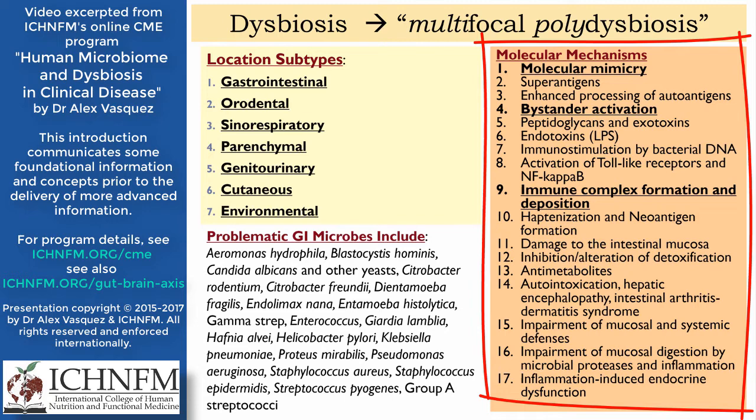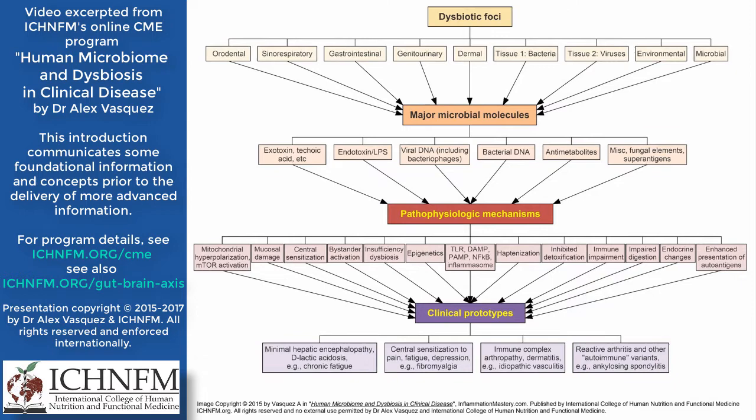On the following slide I'll show you a graphic representation of this material and the overall model. We start with the dysbiotic locations, which include orodental, sinorespiratory, gastrointestinal, genitourinary, and dermal — and also tissue, which includes bacteria and viruses.